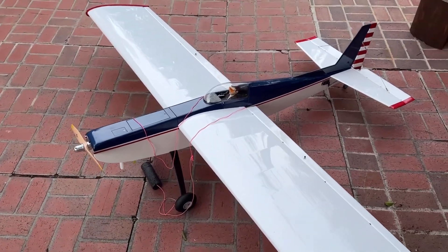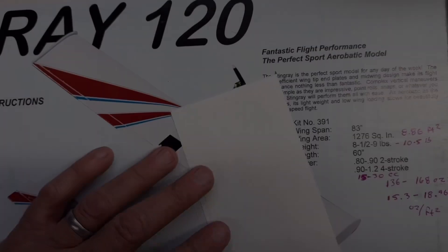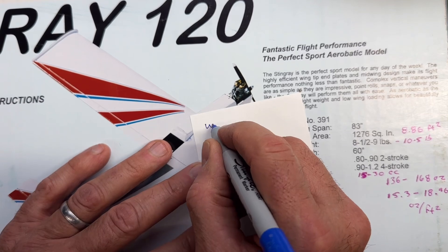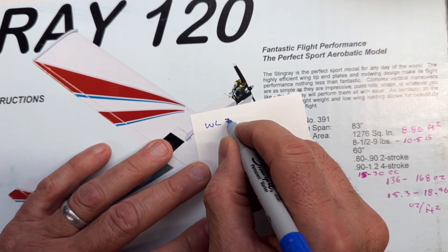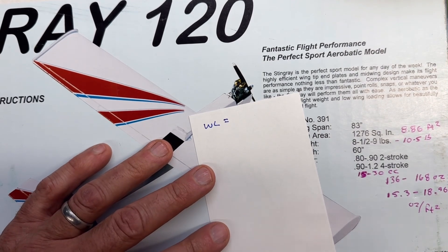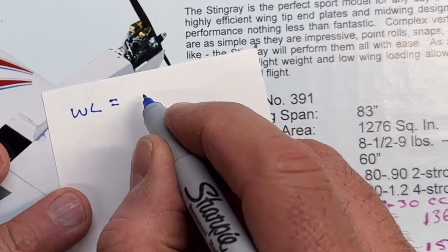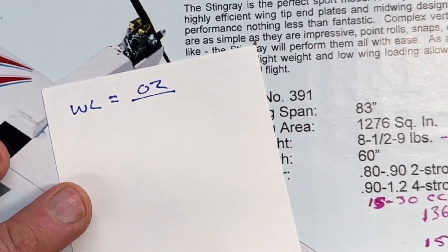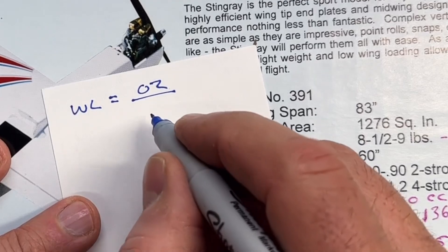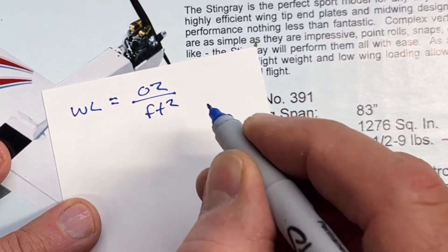So now I'm going to go ahead and check the wing loading just for fun. So wing loading, I'll just use WL, is the weight of the airplane expressed in ounces divided by the area of the wing usually expressed in square feet.